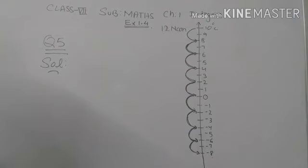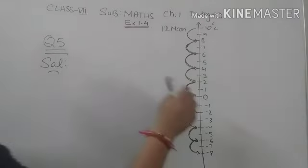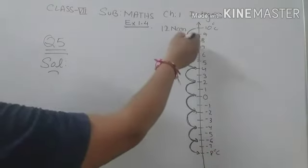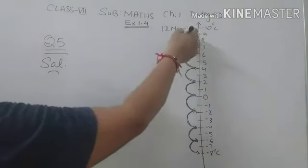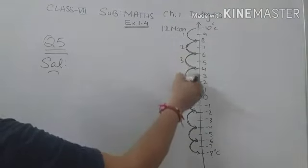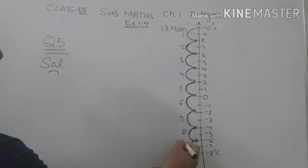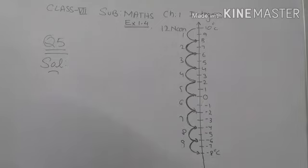We check in how many hours temperature reached minus 8 degrees centigrade. Count the hours: 1, 2, 3, 4, 5, 6, 7, 8, and 9. So after 9 hours, temperature reached minus 8 degrees centigrade below zero. We add 12 noon plus 9 hours. After 12 noon, 9 hours gives 9 PM. So our answer is 9 PM.